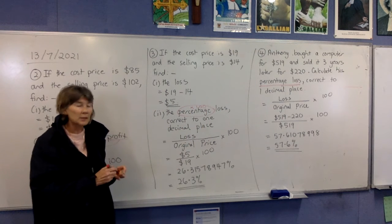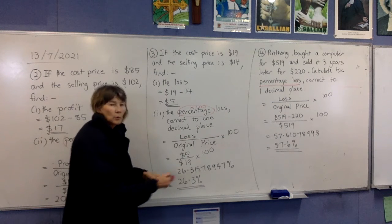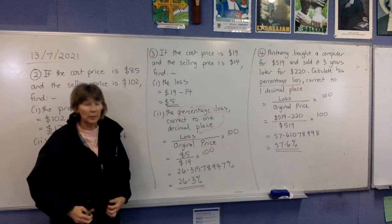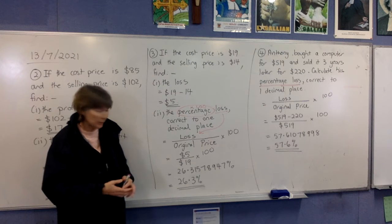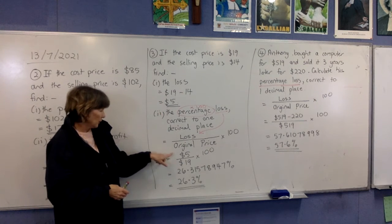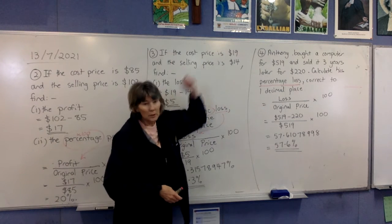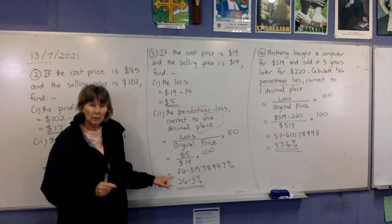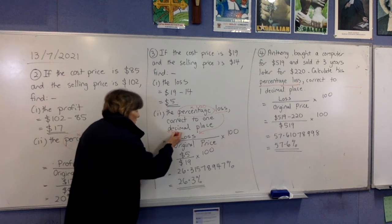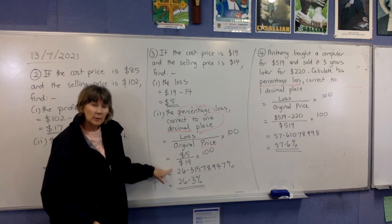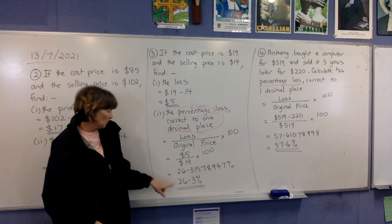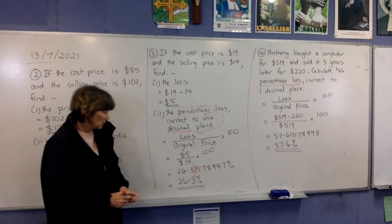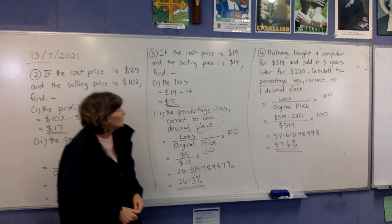To find the percentage loss: the word 'percentage' means times 100, and the important word 'loss' goes to the top of the fraction. It's always the original price on the bottom when there are no other important words in the question. Our loss was $5, our original price was $19, then times all that by 100. Use your SD key on your calculator to get a decimal, then round to one decimal place. That digit is less than five so it stays: 26.3%.